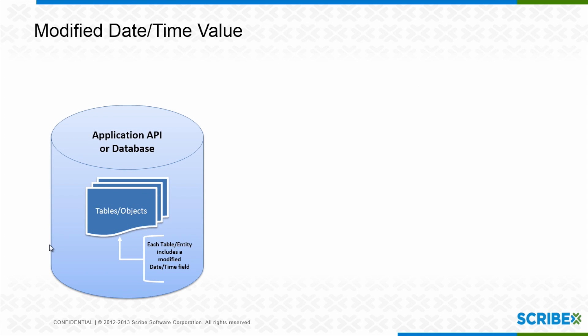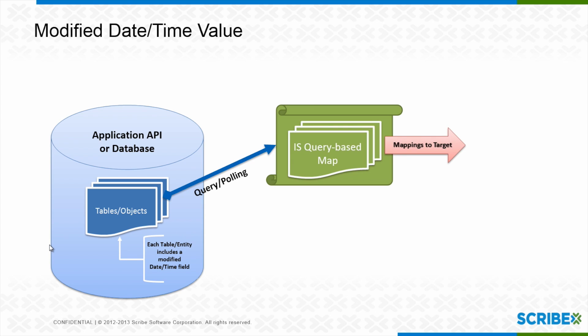You mentioned something called a high-watermark — that's Scribe terminology. You're going to be choosing one date-time field per map. What's happening is we're going out to that database or application's API, say to an accounts table or object, and querying data, asking: what are the accounts that have a last modified date greater than a certain value? That's my high-watermark. My maps are going to keep track of the data they're processing so that I'm just getting the new data.